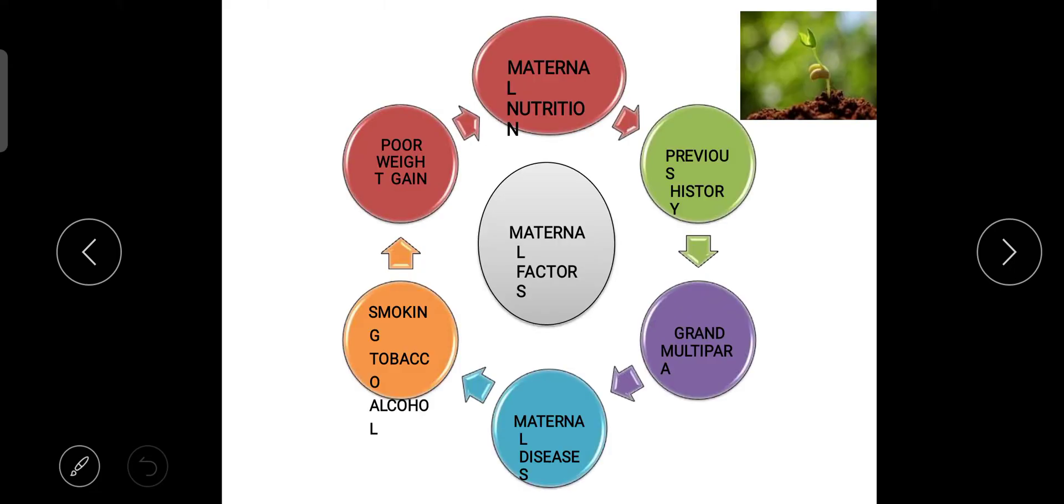First one is maternal factors which cause SGA like previous history. If the mother has the history of small for gestational age baby before, they can get in the second baby also same. Next is grand multipara. Grand multipara means if the mother is having age above 35 years and having like two or three or four children, there is a chance of having small for gestational age baby. Then maternal disease. If the mother is suffering from any disease that can also affect the baby like diabetic, thyroid, cancer, tuberculosis.